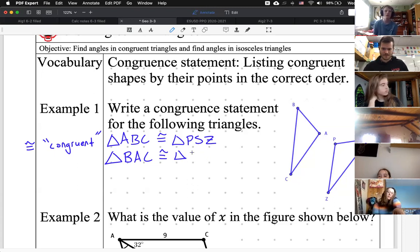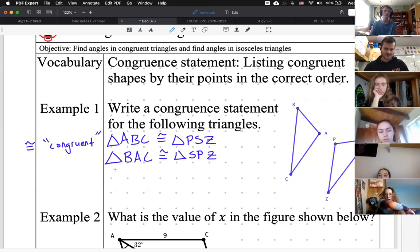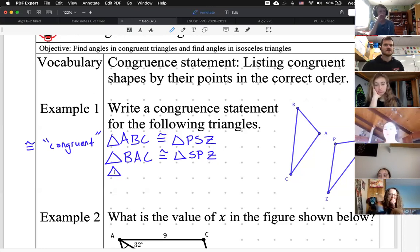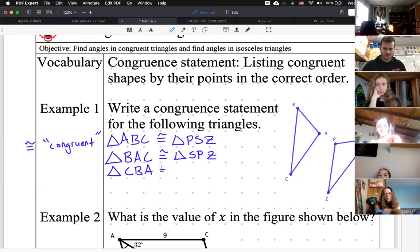Would it be S, P, Z? It is indeed S, P, Z. Someone give me another congruency statement. Ulysses, go for it. C, B, A. C, B, A is congruent to...